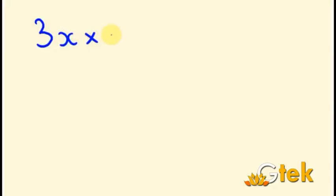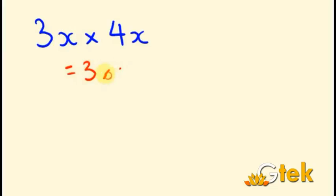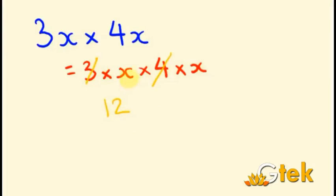Another example: 3X into 4X. Expanding: 3 times X into 4 times X, which is 3 into X into 4 into X. So 3 into 4 is 12, and X into X is X squared. The answer is 12X squared.